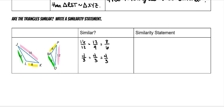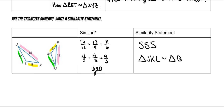Four goes into 16 four times and into 12 three times; three goes into 12 four times and into 9 three times; two goes into 8 four times and into 6 three times — all reduce to four-thirds. So yes, they are similar by side-side-side. The similarity statement is triangle JKL is similar to triangle QPM, matching corresponding vertices by their color-coded sides.